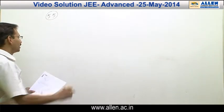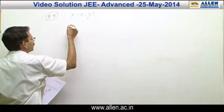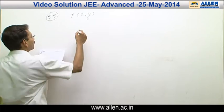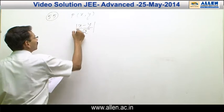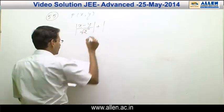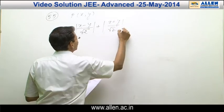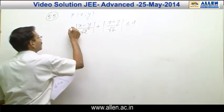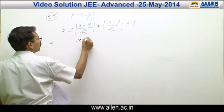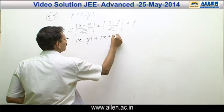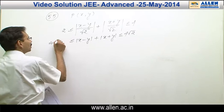Let us consider the point P is (x, y) in the first quadrant. Then dP1 will be the length of the perpendicular on x minus y equals 1, which is |x minus y| upon root 2, plus dP2 will be the length of the perpendicular on x plus y equals 0. This sum lying between 2 and 4 implies mod(x minus y) plus mod(x plus y) is between 2 root 2 and 4 root 2.